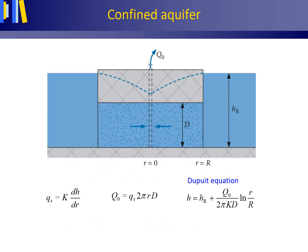This figure shows radial symmetric steady groundwater flow to a fully penetrating pumping well in a confined aquifer in cross-section view. A fully penetrating well is a well that is incised to the top of the below impermeable layer. Please acknowledge that this cross-section view rotates around the centre of the aquifer.